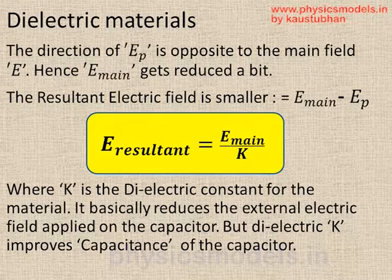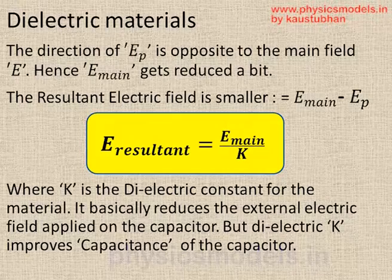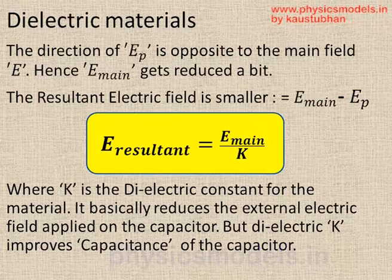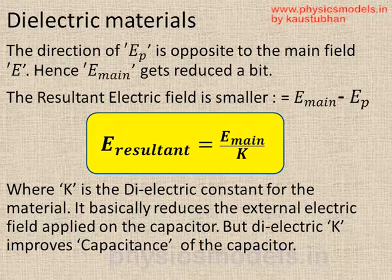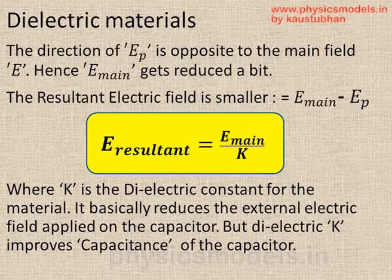Here is the way it's represented. The resultant electric field is smaller, E_main minus E_P. It's also written as E_resultant equals E_main divided by K, and that K is the dielectric constant for whatever material we choose for putting in between those capacitor plates.